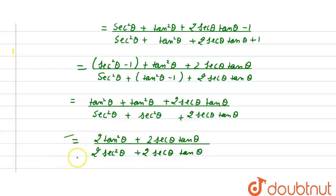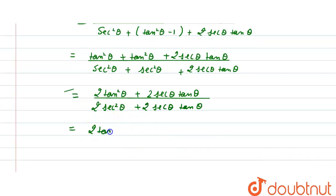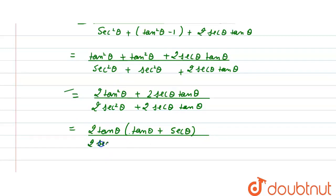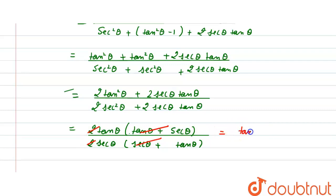By taking 2 sec θ as common from the numerator, we get (tan θ + sec θ). In the denominator, we also take 2 sec θ as common to get (sec θ + tan θ). We then cancel (sec θ + tan θ) from numerator and denominator, and the 2s cancel each other, leaving tan θ / sec θ.